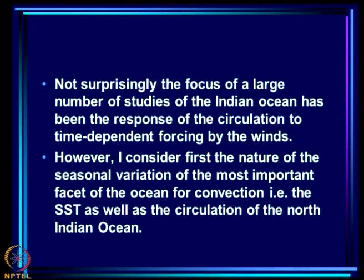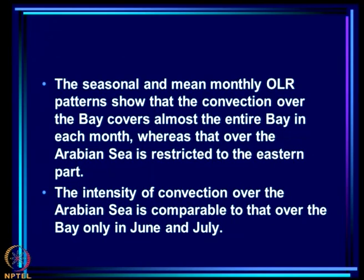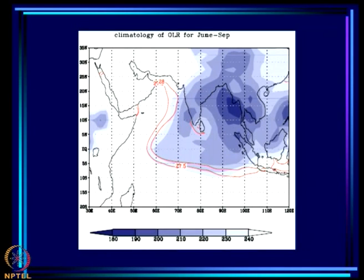However, we are not going to focus too much on the winds here, because what I consider more important is the nature of the seasonal variation of the most important facet of the ocean for convection — namely the sea surface temperature and the circulation of the North Indian Ocean. The seasonal and mean monthly OLR patterns show that for June to September, almost the entire Bay is covered with deep convection, as is part of the eastern Arabian Sea. Notice the SST isotherms: the region inside the red line is warmer than 28°C.